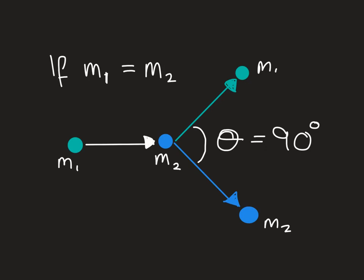Now let's look at a notable situation worth always keeping clear in your mind. If we have a similar scenario but M1 equals M2 — the two objects have equal mass — when the two objects move off after the collision, the angle between them is always going to be 90 degrees. So whenever the two objects in a collision have identical mass, the angle between their post-collision velocities is always 90 degrees. If you're looking for something to do, you can have a go at showing that mathematically.